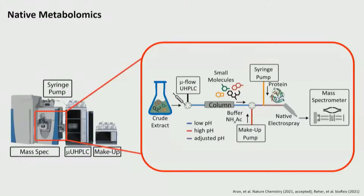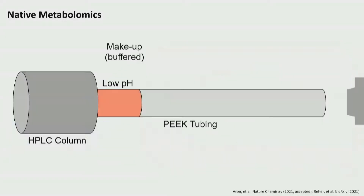What we came up with is to use a post-column makeup flow where we can bring back the low pH and high acetonitrile conditions to a more physiologically relevant pH, as well as dilute down the acetonitrile a little with the makeup flow.